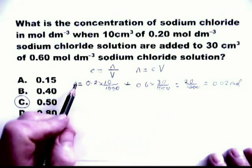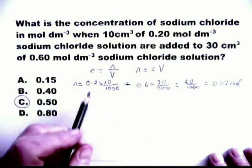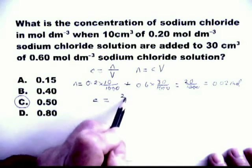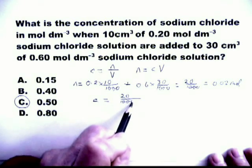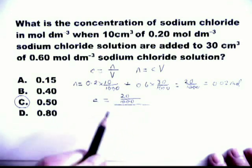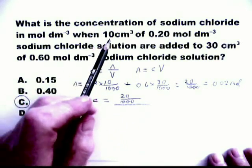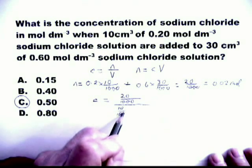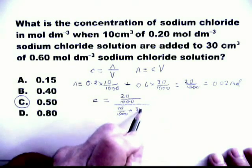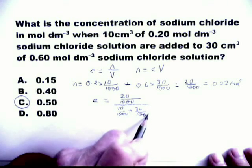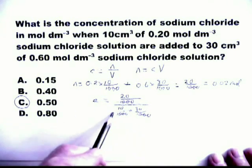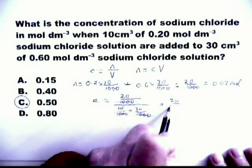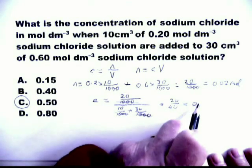Now we have N. We're going to use the other formula. C equals the value of N, which is 20 over 1,000. And the volume is 10 plus 30. 10 over 1,000 and 30 over 1,000. Now we can eliminate the thousands. And that equals 20 over 40, which equals 0.5. Which is the same answer as before.